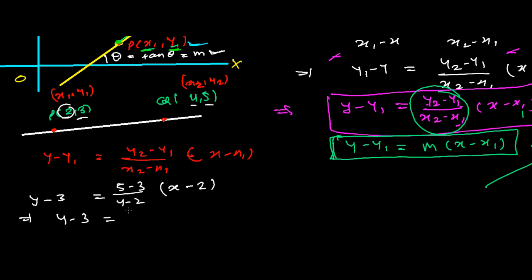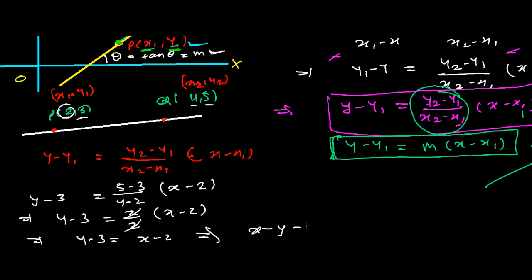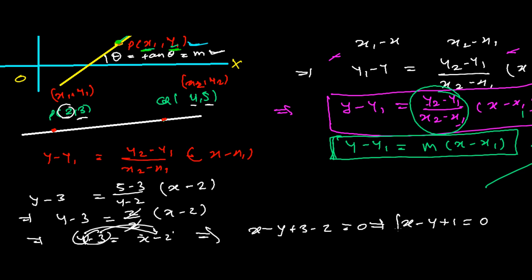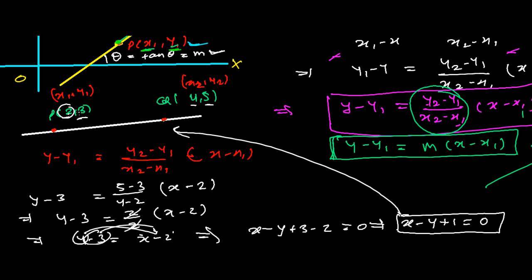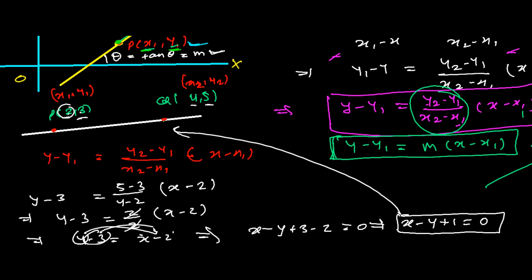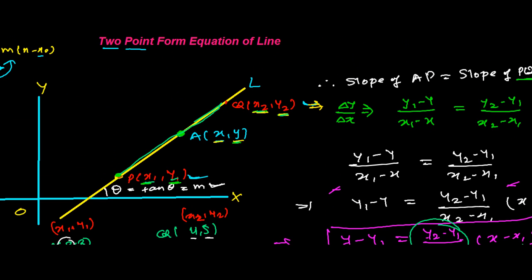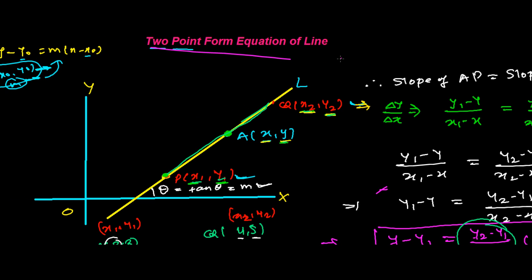Substituting: y - 3 = (5 - 3)/(4 - 2) times (x - 2), which gives y - 3 = 2/2 times (x - 2). The 2's cancel, so y - 3 = x - 2. Rearranging: x - y + 1 = 0. So x minus y plus 1 equals 0 is the equation of the line passing through (2, 3) and (4, 5). This is how we find the equation using the two-point form.